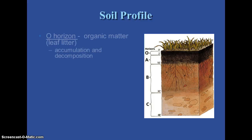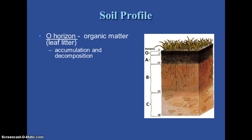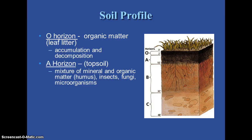Here's our soil profile with our horizons. The O horizon is that organic material at the top, also called leaf litter if you're in a forest. If you go out in the woods and look at the soil underneath the trees, it's very dark in color because of that leaf litter — that partially decaying organic material. Below that is the topsoil, or A horizon. It's a mixture of mineral and organic matter, which we call humus — not hummus, that's the stuff you eat. The A horizon is where you find insects, fungus, and microorganisms like bacteria that drive our nitrogen cycles.